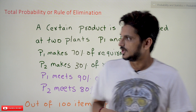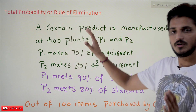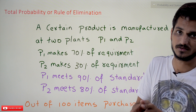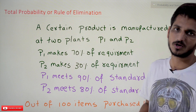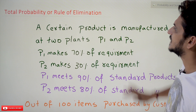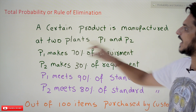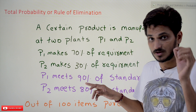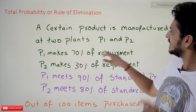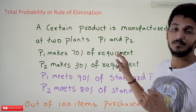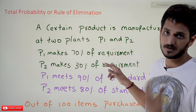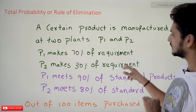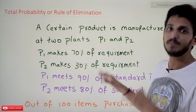In order to understand what total probability means, we are going to take an example first, and along with this example we will understand the concept. Then we will go with the definition. The example says: a certain product is manufactured at two plants, P1 and P2. P1 makes 70 percent of the requirement — meaning if the market needs 100 products, P1 manufactures 70 of them. P2 makes the remaining 30 percent.